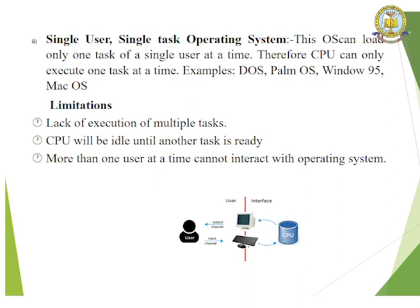Single user single-task operating system loads only one task of a single user at a time, so the CPU can only execute one task at a time. Examples include DOS, Palm OS, Windows 95, and Mac OS. Limitations are lack of execution of multiple tasks, CPU will be idle until another task is ready, and more than one user at a time cannot interact with the operating system.